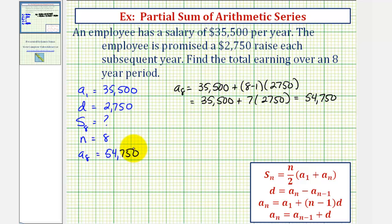And now we have all the information we need to find the total earnings over an eight-year period, or s sub eight. This is equal to n divided by two, which in our case would be eight divided by two, times the quantity a sub one plus a sub n, which is 35,500 plus 54,750.